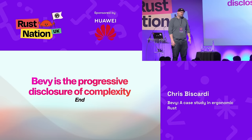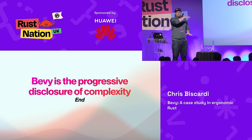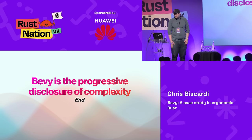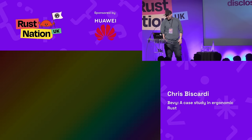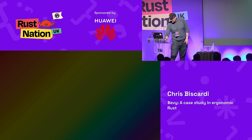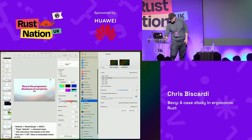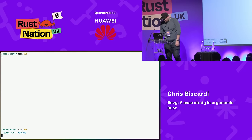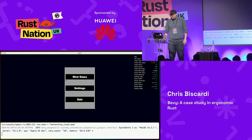The end: Bevy is the progressive disclosure of complexity. The ergonomics of the APIs are actually a bunch of stacks of different APIs at different levels — from the basics to the expert level and everywhere in the middle. I do have a game if you all want to see it.